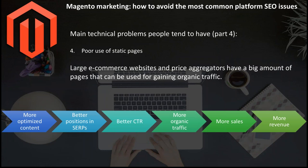The fourth issue for Magento is poor use of static pages. On massive e-commerce stores, there is a big opportunity in static catalog pages that can be used for gaining organic traffic. Proper content written for each of those pages and their optimization can boost your website's presence in Google search engine results, and therefore traffic and sales. If you write keyword-optimized text for pages that can gather sufficient organic traffic, this brings a huge effect — more optimized content brings better positions in SERPs, better CTR, more organic traffic, more sales, and more revenue.